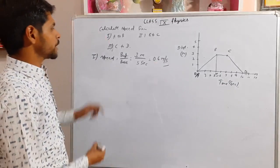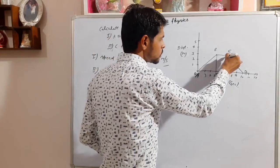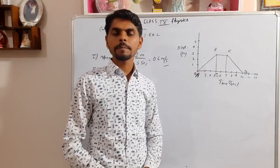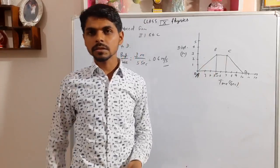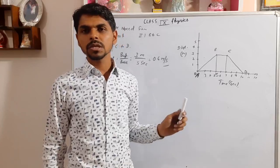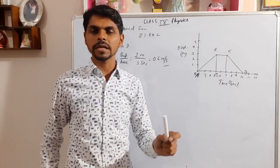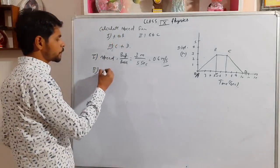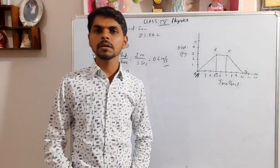For the second part, from B to C: looking at the graph, it is a straight line parallel to the time axis. This means the body is at rest from B to C. If the body is at rest, it has no speed, so speed from B to C is 0.